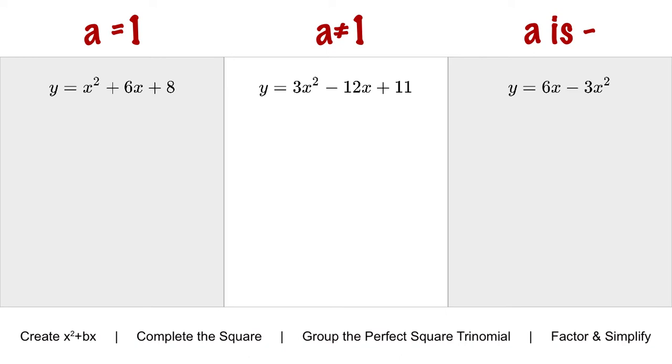So now let's do the whole process. We're changing the way this looks, and we're going from standard form, which is ax squared plus bx plus c, and we're turning it into vertex form, which is a(x minus h) squared plus k. We're not changing the value of anything. We're just changing the way it looks.